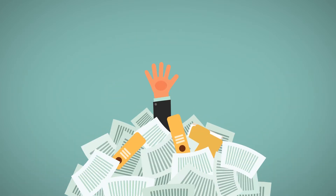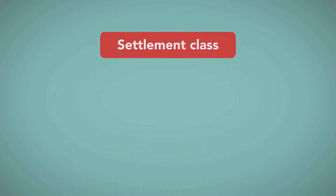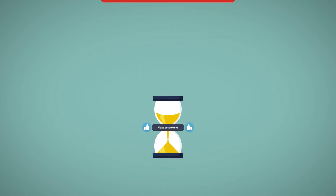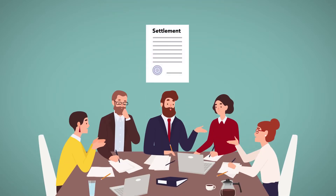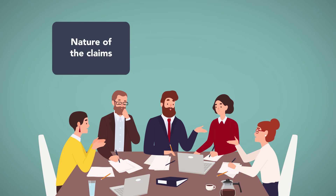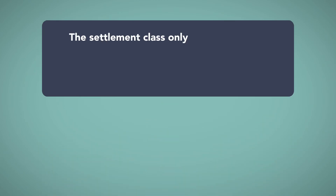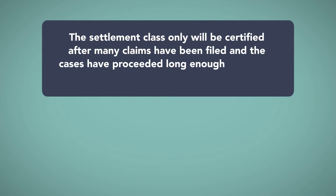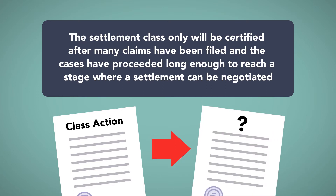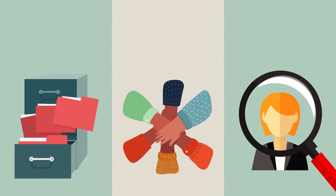These limited class actions, however, cannot handle all aspects of a mass tort. For instance, a settlement class cannot arise until the mass tort action has been in existence for a while and has progressed to the point where a mass settlement is possible. The parties may not be in a position to move a court to certify a class until after a settlement has been negotiated that would address all the claims in the mass tort proceeding. A settlement cannot be negotiated before both sides have some information about the nature of the claims and the extent of the injuries. Therefore, the settlement class will only be certified after many claims have been filed and the cases have proceeded long enough to reach a stage where settlement can be negotiated.